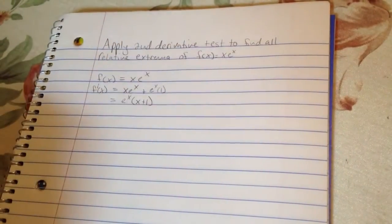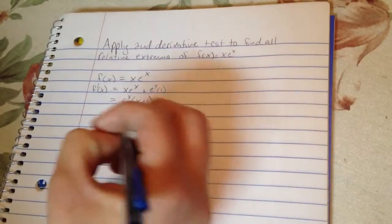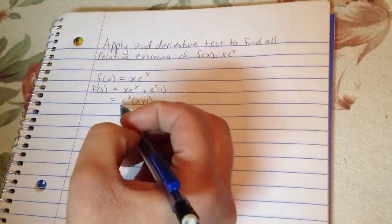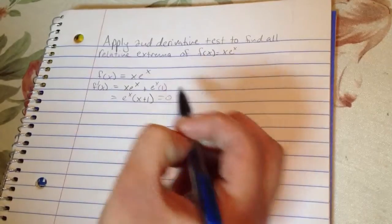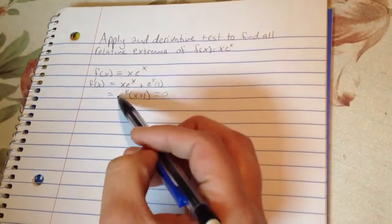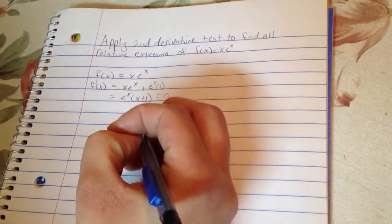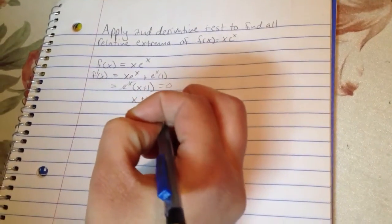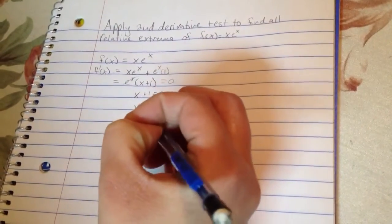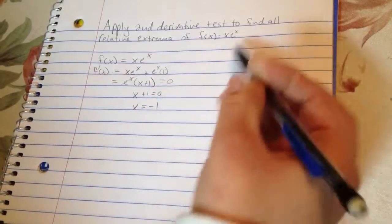What we're going to do now is we're just going to solve for the critical number. So any way you look at it, when we're setting this equal to 0, e to the x is not going to be 0. So basically we're just going to cross that out. So then we have x plus 1 is equal to 0, which means that our critical number is x is equal to negative 1.